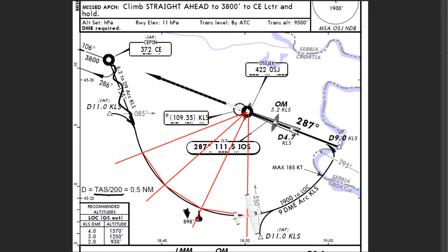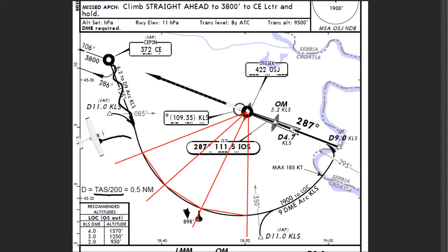The rule is: two times airspeed over 200. So, for example, if this is your position and you wanted to join the arc like this, you should commence the turn at 9.5 miles.